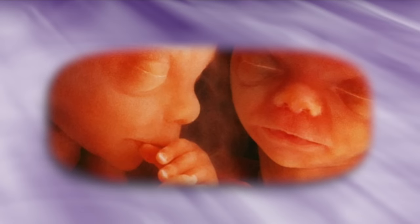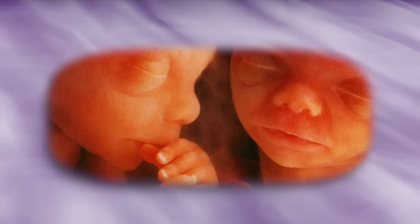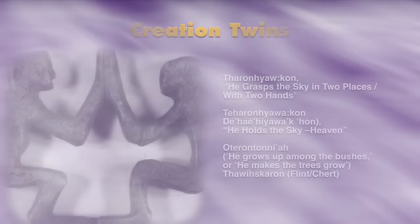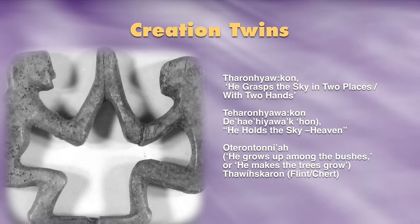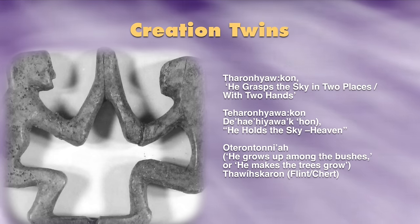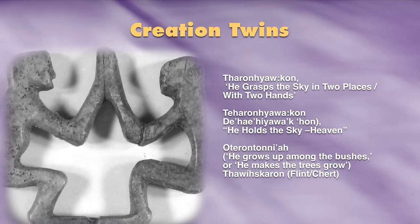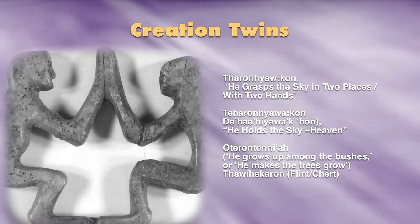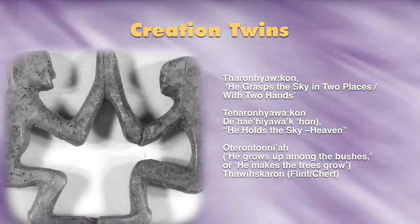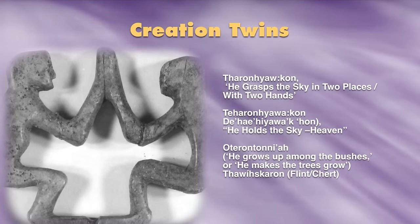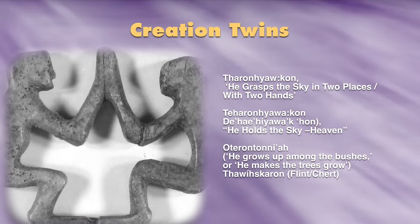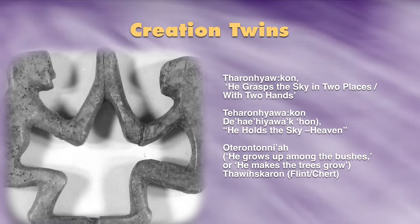One we say is the good-minded twin, made with the arrow with no point. And his brother, whose body was covered with flint, was symbolized by the flint on the arrow tip. These creation twins both had the power to make things, but they also battled — they battled inside their mother's body. When they were born, the good-minded twin was born in the natural way, but his brother decided to be born out from underneath his mother's arm. In doing so, he tore her body apart and caused her to bleed to death. So the good-minded one comes into the world to do good things, while his brother, in actually killing his mother, seeks to destroy all the good things his good-minded brother was creating.